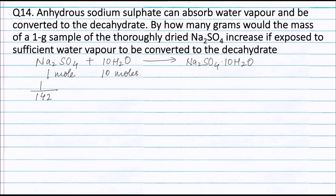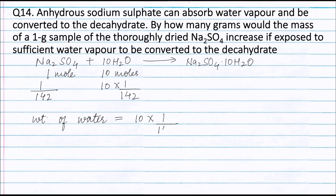Therefore, 1/142 moles of sodium sulphate will react with 10 × 1/142 moles of water. Therefore, the weight of water will be equal to moles of water — that is 10 × 1/142 — multiplied by the molecular weight of water, that is 18 grams, and this is equal to 1.27 grams.